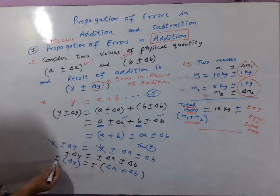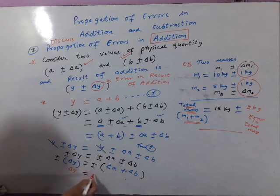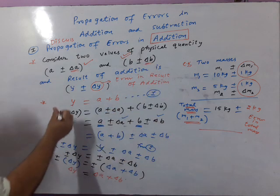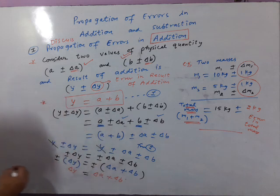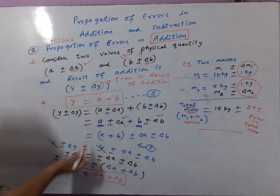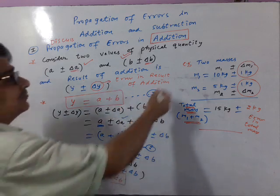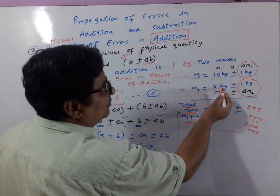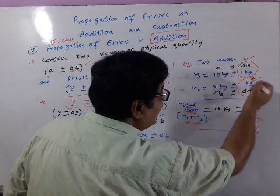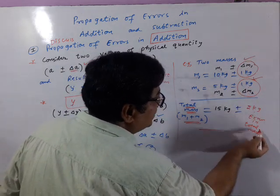So the final result: delta Y equals delta A plus delta B. Delta Y is the error in the result of addition, delta A is error in the first value, and delta B is error in the second value. This means when you are adding two values, their errors are also added up. Y equals A plus B, so error in Y equals error in A plus error in B. Applying this to our example: 10 kg plus 5 kg gives total mass 15 kg, and error in M1 plus error in M2 — 1 kg plus 1 kg — gives error in total mass of 2 kg.